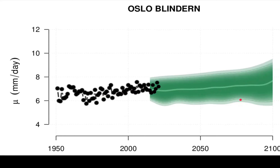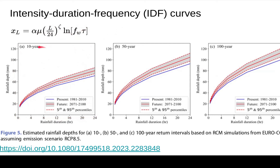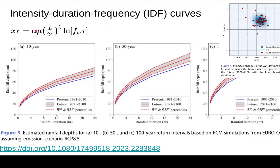We can use these two parameters to estimate the shape of curves as well. One example is the intensity-duration-frequency (IDF) curves. The blue ones show the present and the red ones show the future IDF curves. The x-axis shows the duration of rainfall and the y-axis shows the amount of rainfall. These curves are based on a parametric equation with the wet day mean precipitation and wet day frequency as parameters, L as the duration of rainfall in hours, tau as the return interval, and alpha as calibration coefficients. Here we used wet day mean precipitation and frequency from the Eurocode-X ensemble, and you can see the ensemble spread as well.